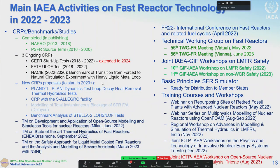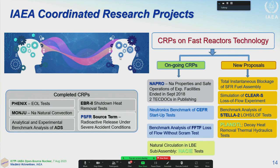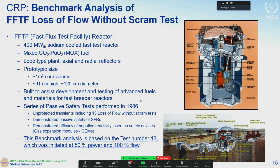This slide shows our main activities in the field of fast reactor technology, which you can look at and read the reports about. One of the most important activities we conduct is coordinated research projects, or CRPs. On several topics, we organize these projects — typically four years long — inviting 15 to 30 organizations from around the world to participate. I will show you several examples of the CRPs.